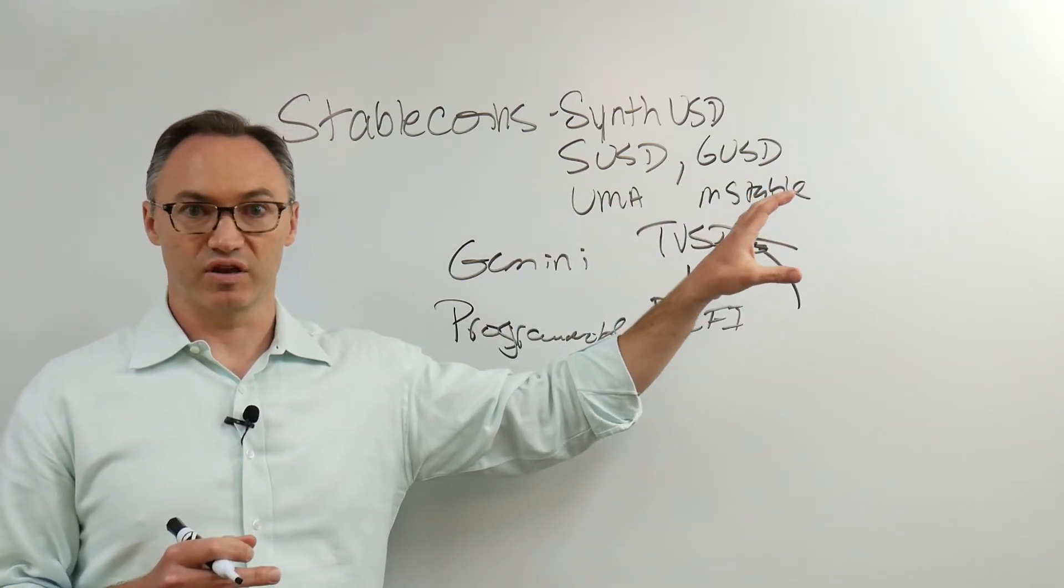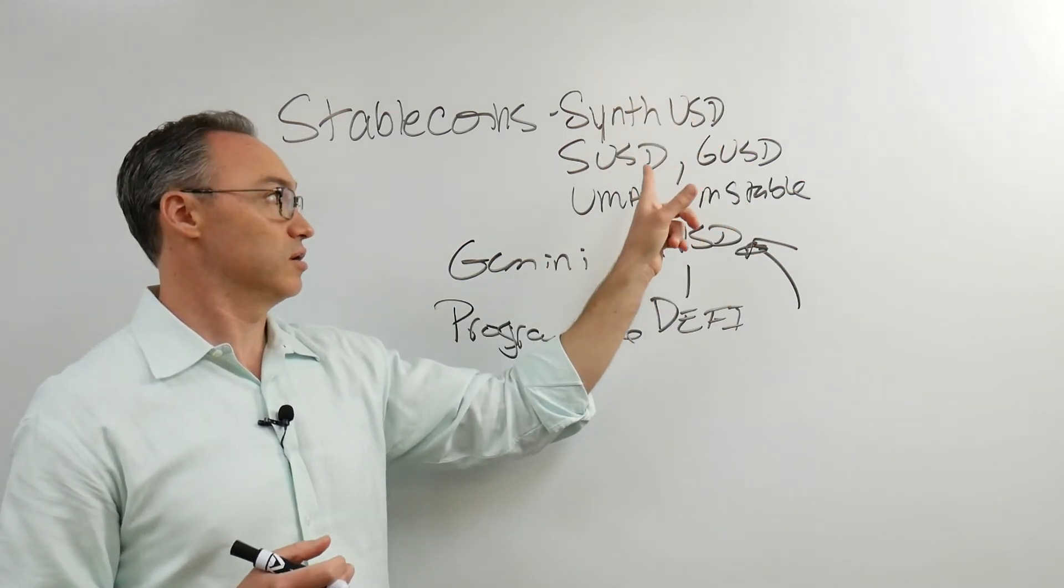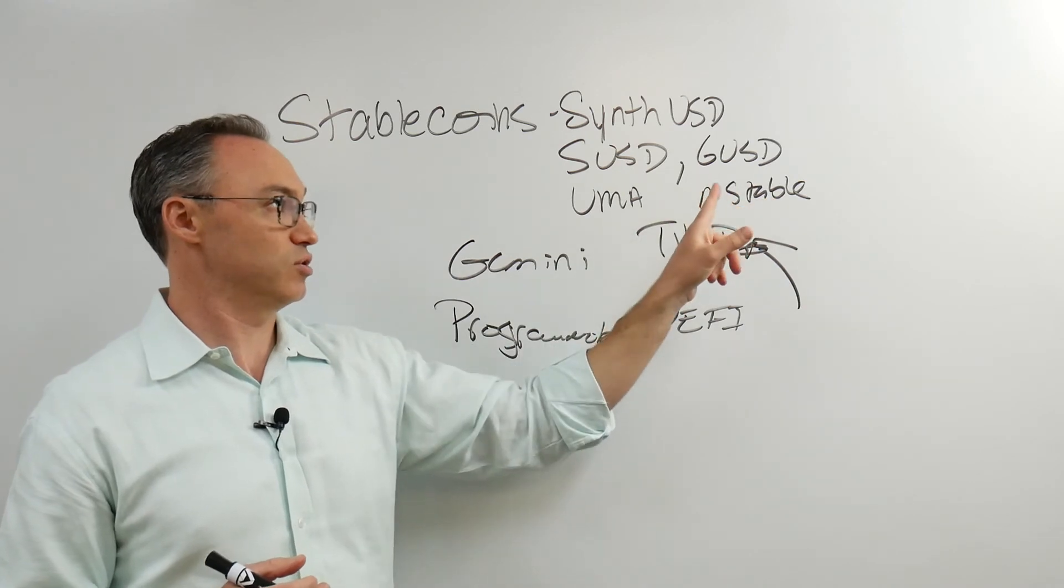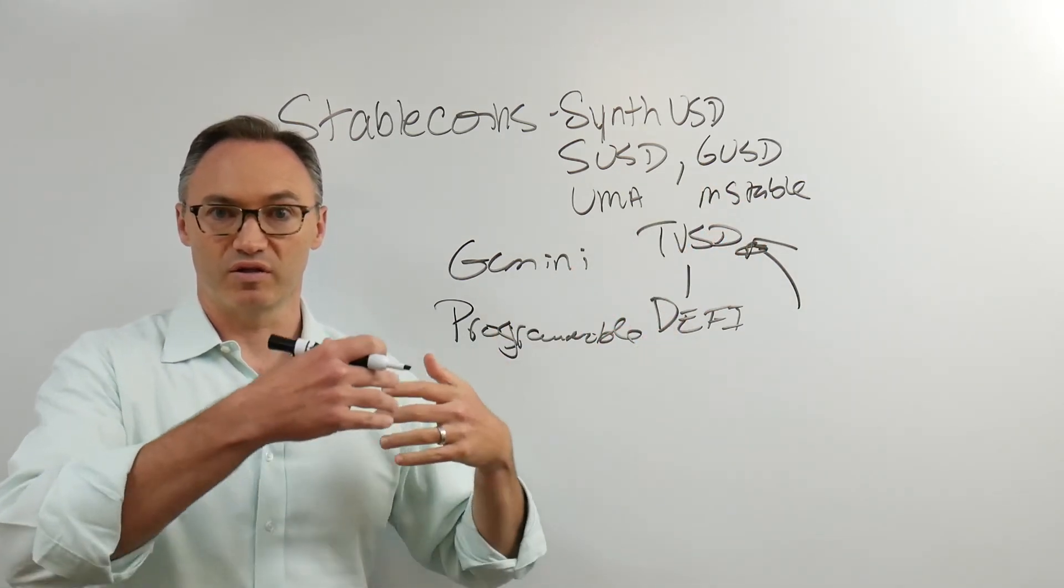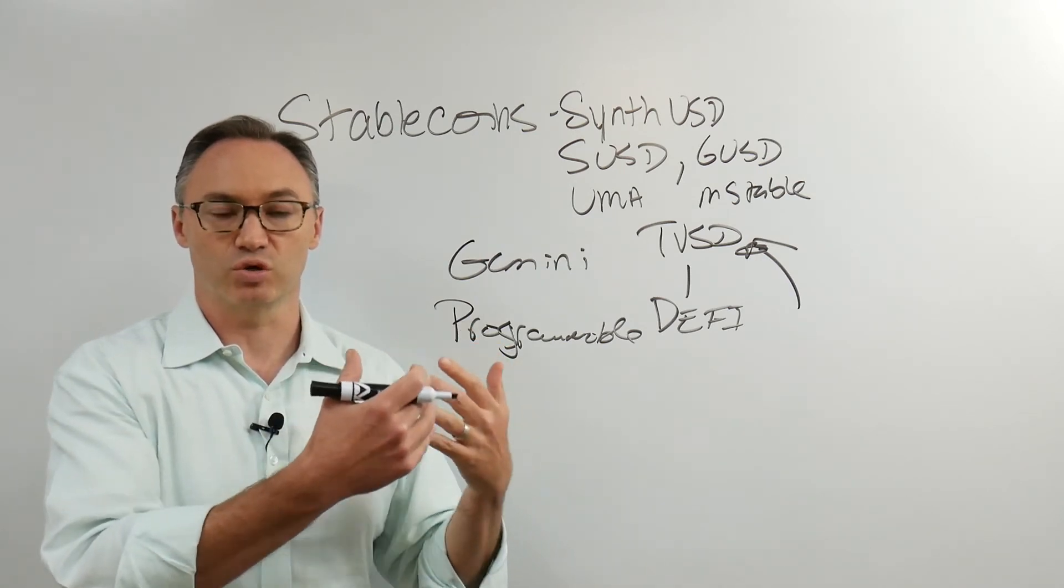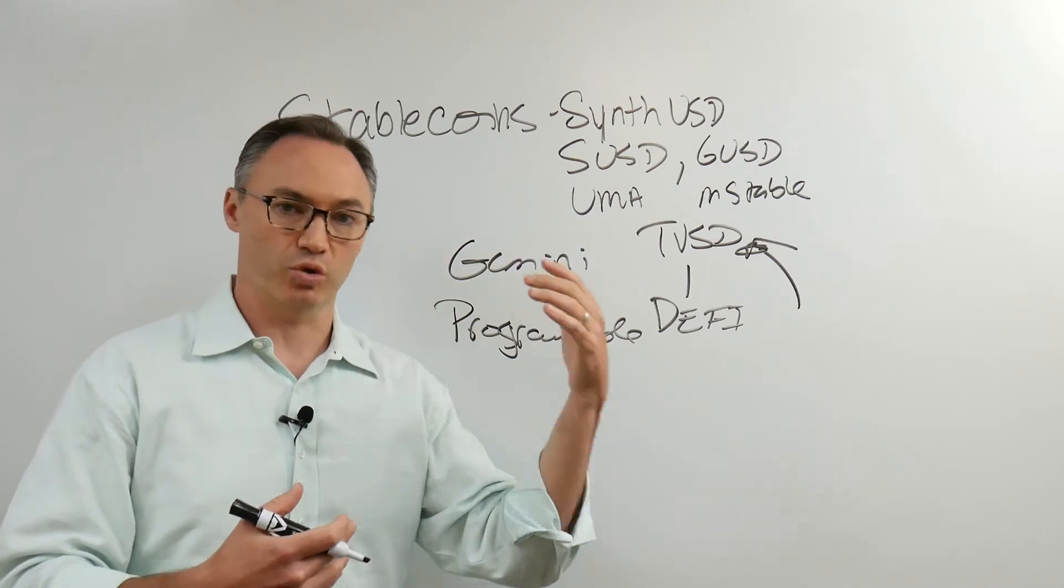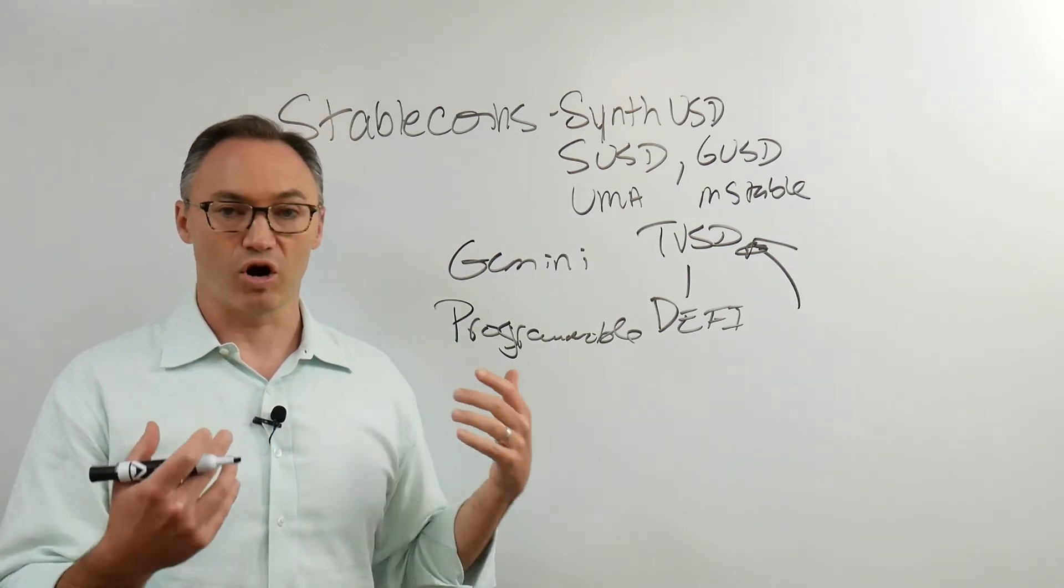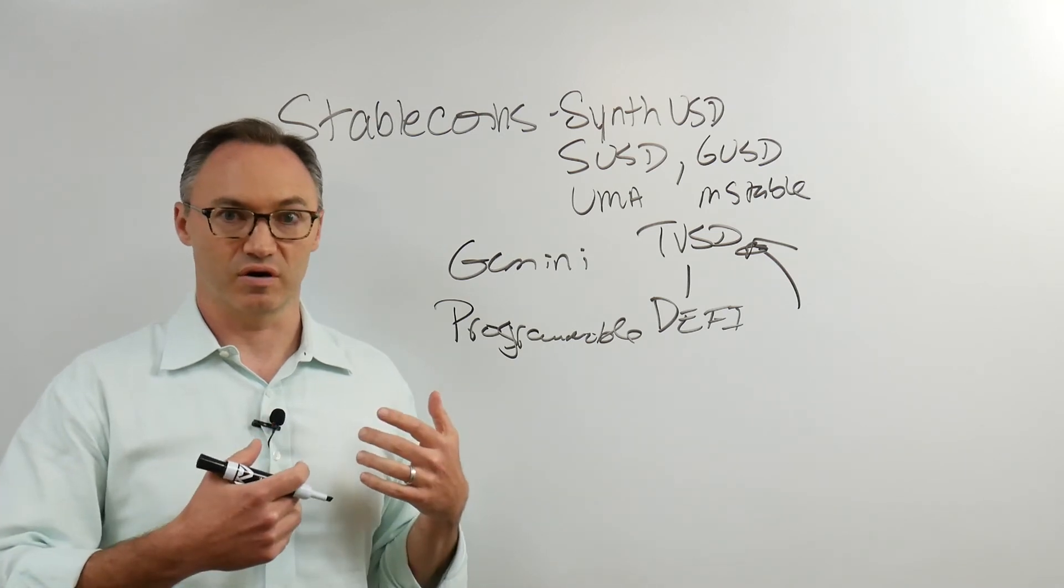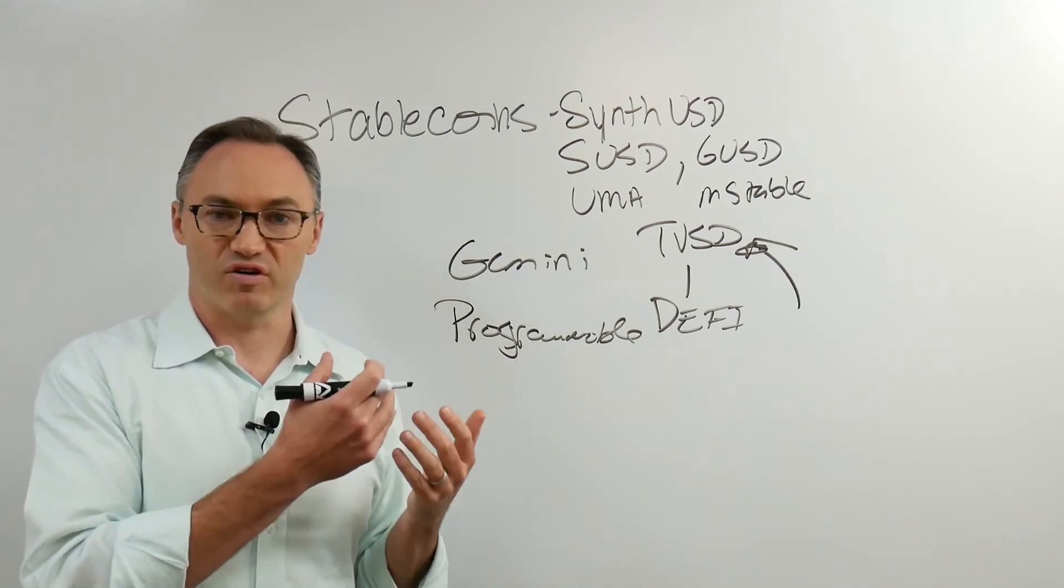The thing to watch out for is, are these all actually worth a dollar? Can I trade one synthetic USD for one GUSD? Can I use the MUSD, whatever it might be? Can I exchange those always for a dollar? Is one SUSD always worth one DAI, always worth one USDC? And they aren't always like that. So there are arbitrage opportunities.